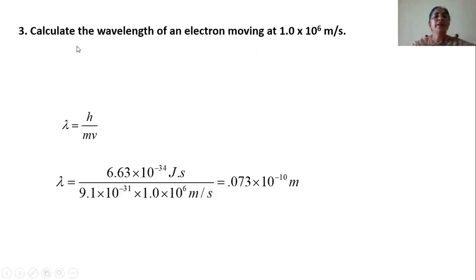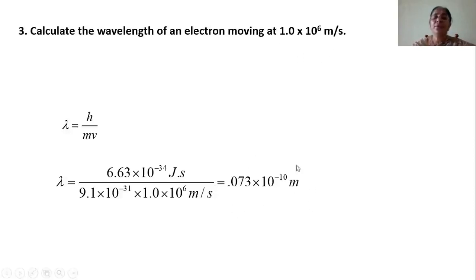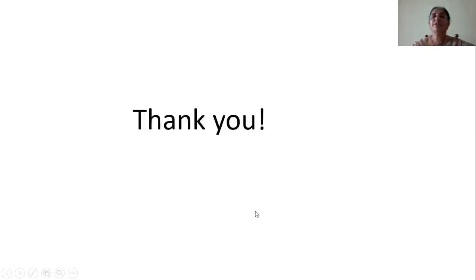The third problem: calculate the wavelength of an electron moving at 1 × 10⁶ m/s. The formula is λ = h/mv. Just substitute the values. Previously we used 50 kg, but now for an electron, look at the wavelength — it is very very large compared to the previous problem. With this, today's session gets over. I hope you would have understood what matter waves are, and you have solved some problems to get clarity over the concept of matter waves. Thank you.